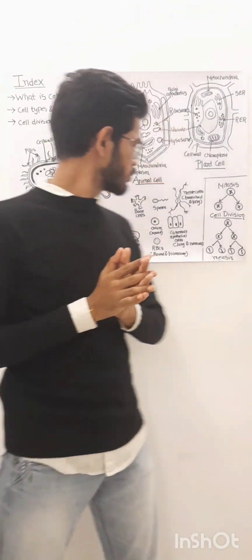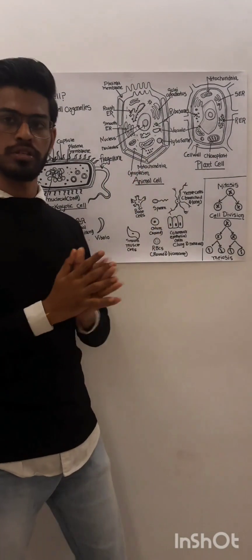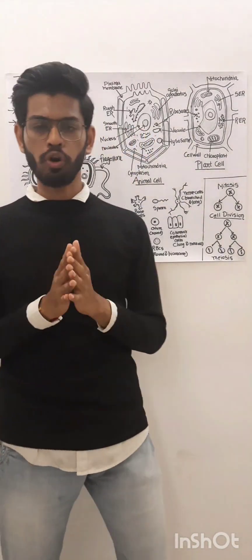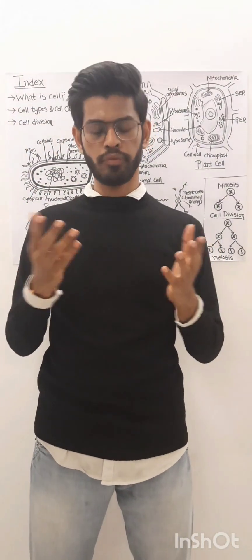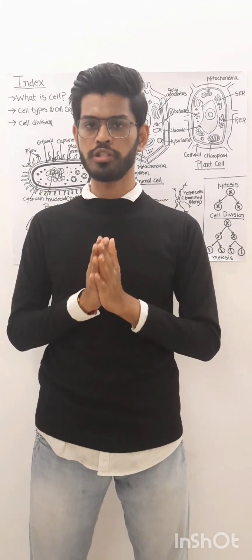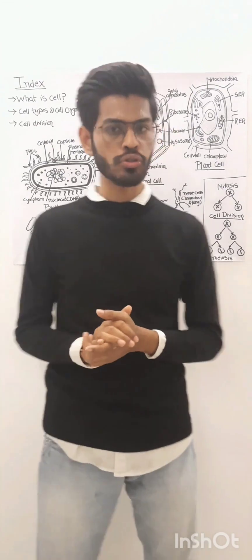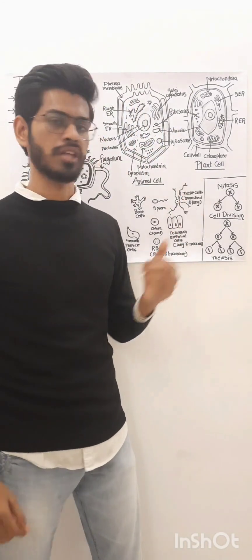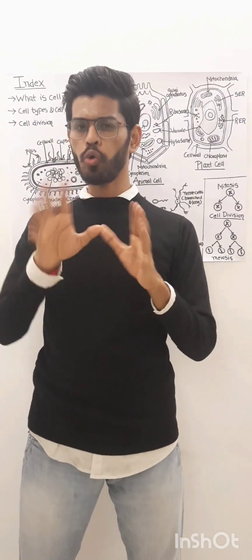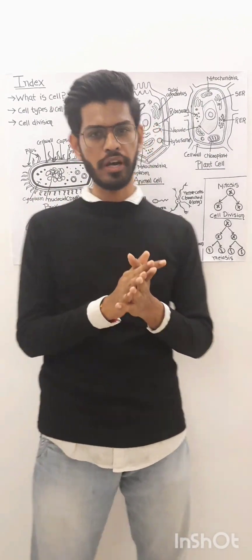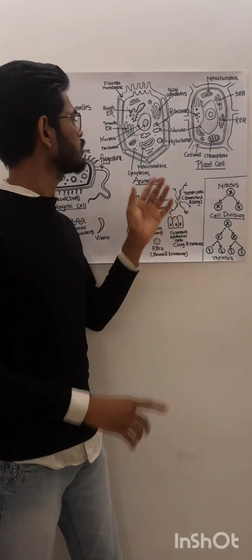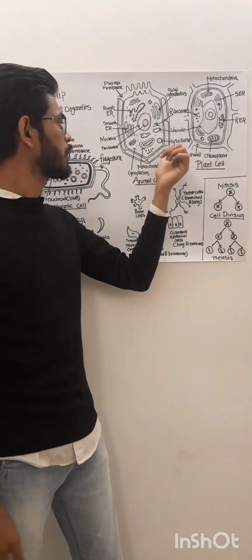The next is the eukaryotic cells. Eukaryotic organisms are organisms that are made up of more than one cell, so they are known as multicellular organisms, for example plants, animals, and humans - you and me. Let's look at the structure like animal cell and plant cell. The structure of animal cell and plant cell is almost similar except two or three things.